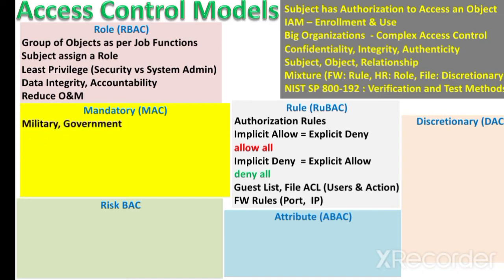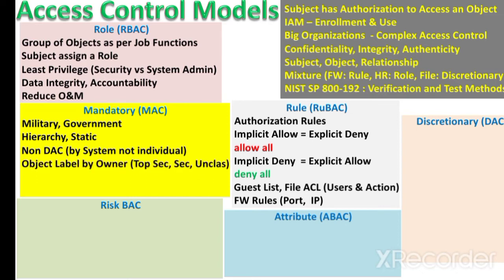The next model is mandatory access control (MAC), which is mostly implemented by military or government organizations. It is very static and follows a hierarchy. It is also known as non-discretionary access control because authorization decisions are made by the system, not at the discretion of individuals. It works on security labels assigned to both objects and subjects. Security labels of objects are defined by the owner or creator — for example, top secret, secret, or unclassified — and a subject must have a matching classification level to access an object.